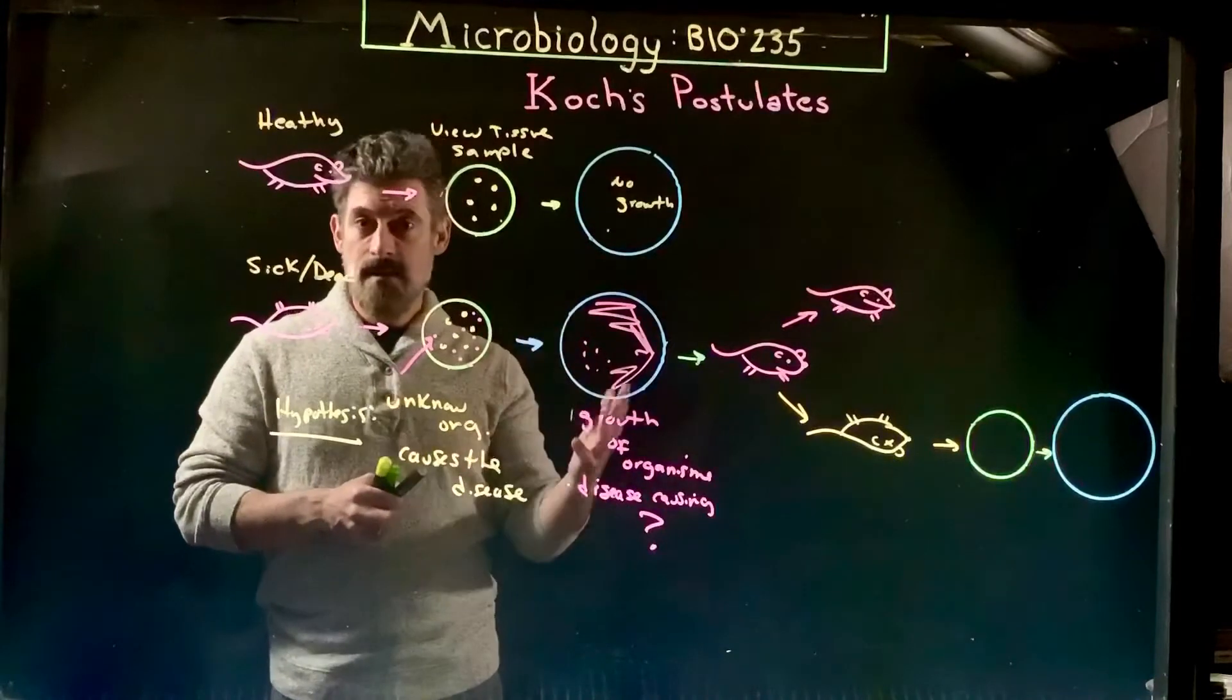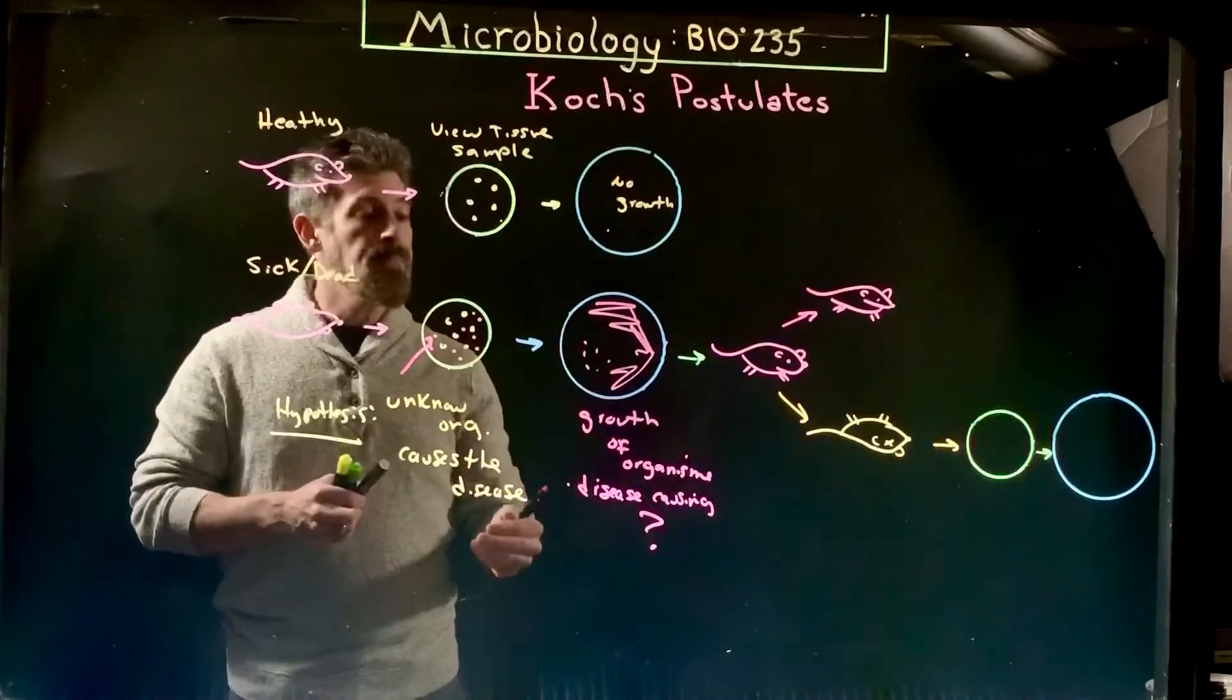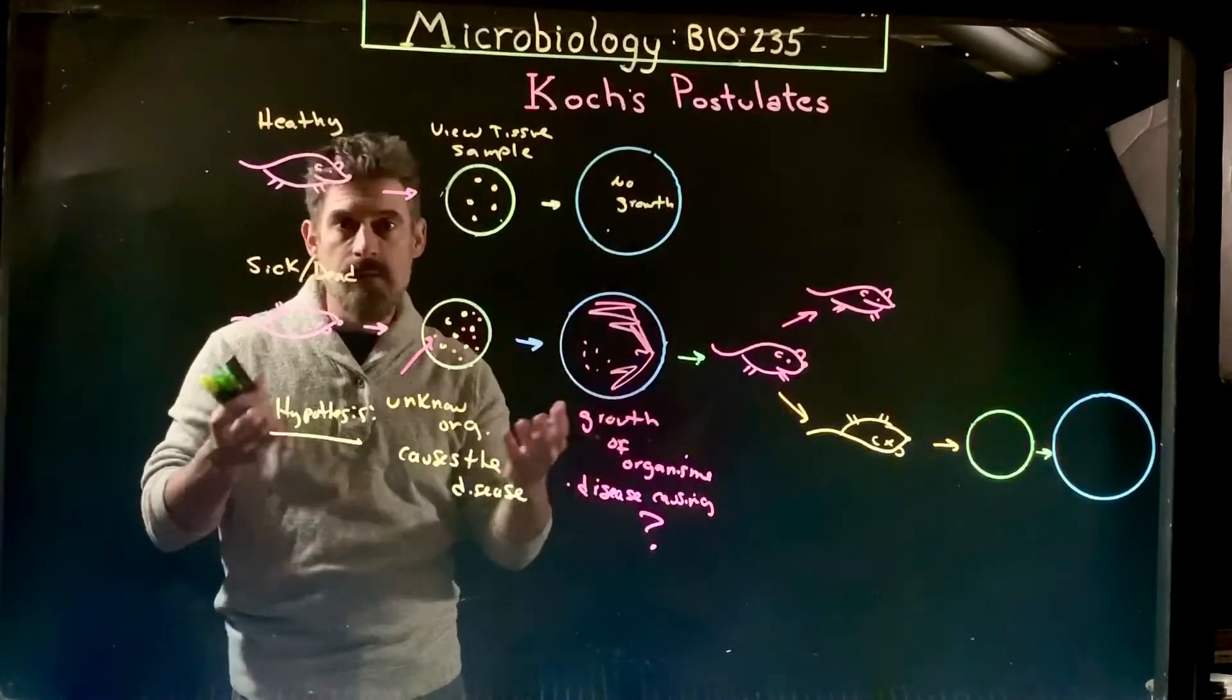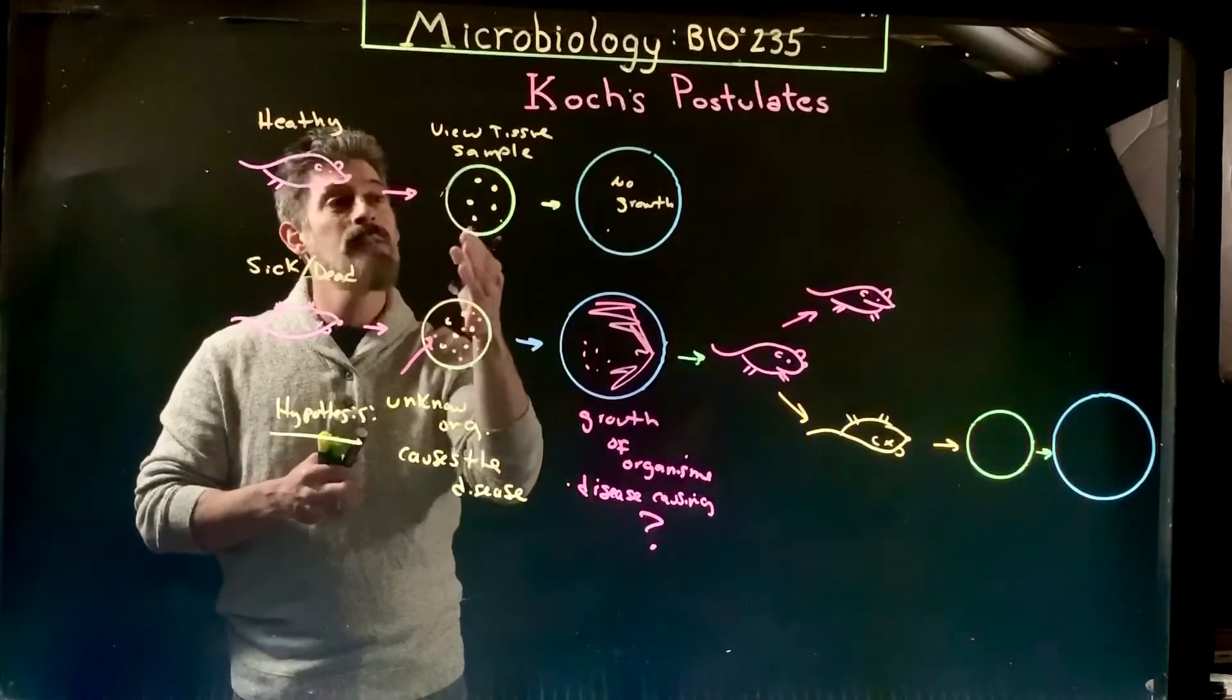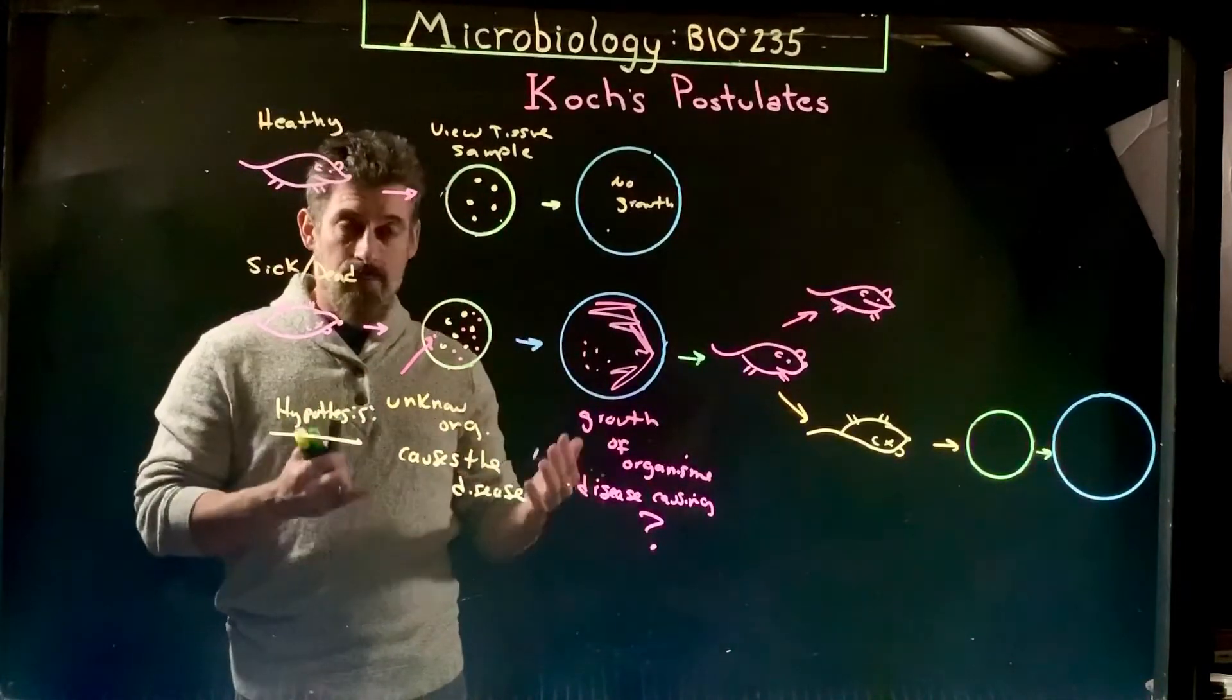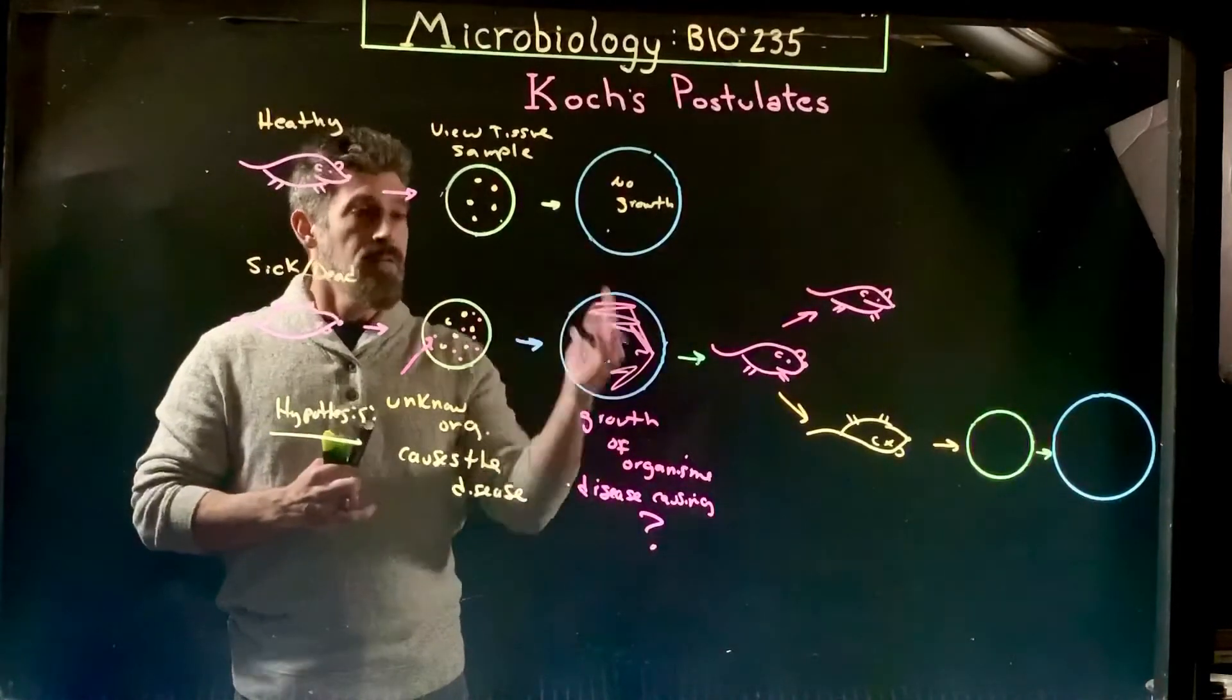Another difficulty or problem with this that still happens today is culturability. Not everything can be cultured in the lab. So that's one limitation here. You might say, 'Oh, nothing grew here either,' but there is something there in the sample. That's why it's important to both view things, say under a microscope, tissue samples and staining to actually find or probe for other organisms and different types of cells, and then you can see if you can grow them.